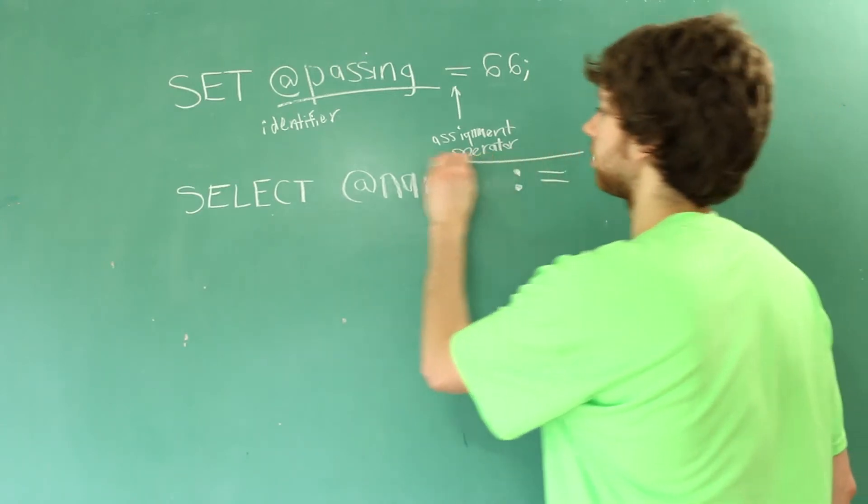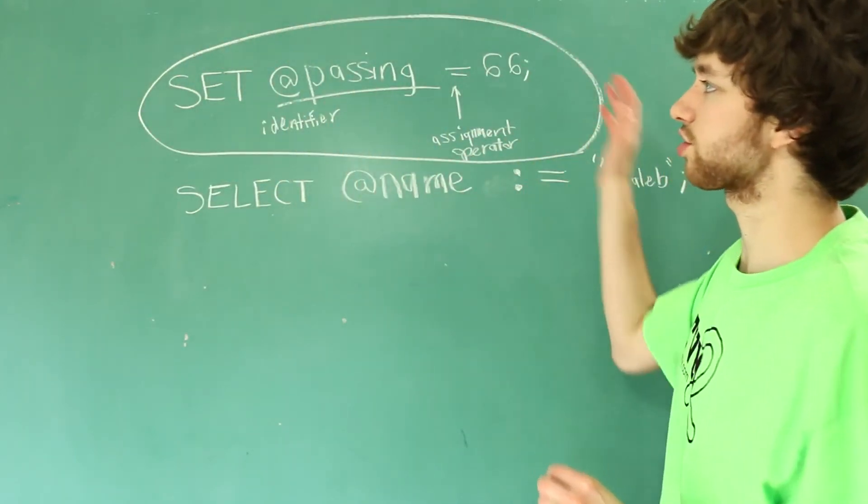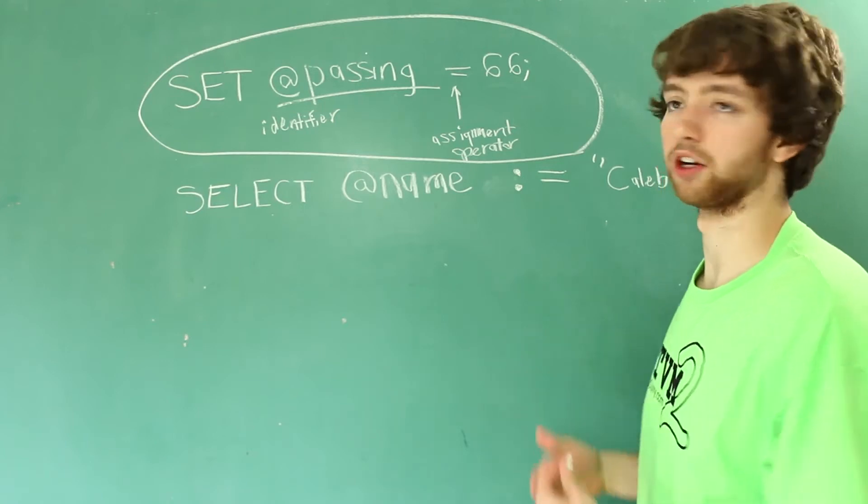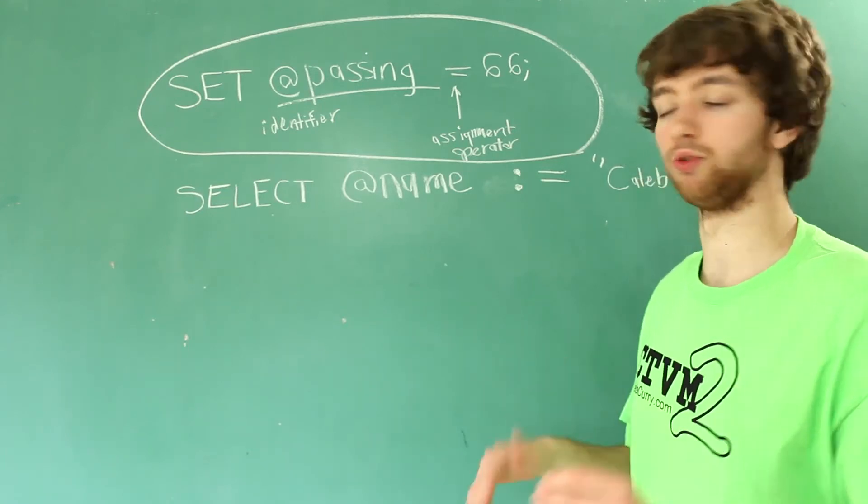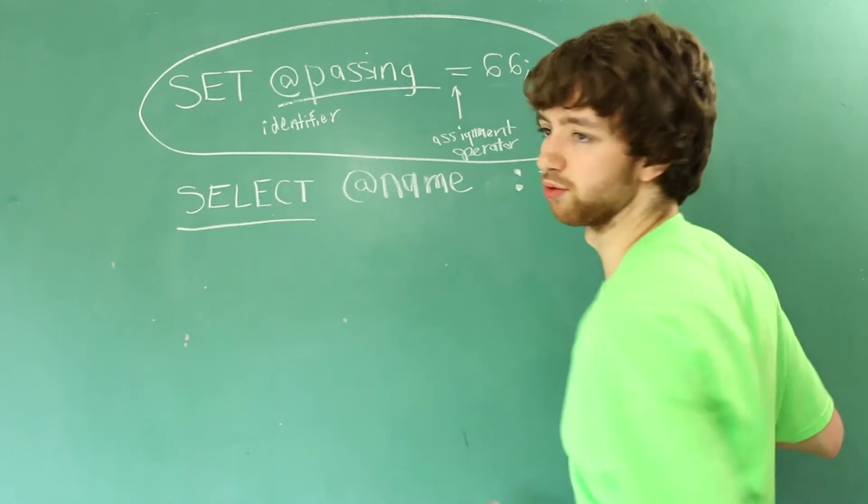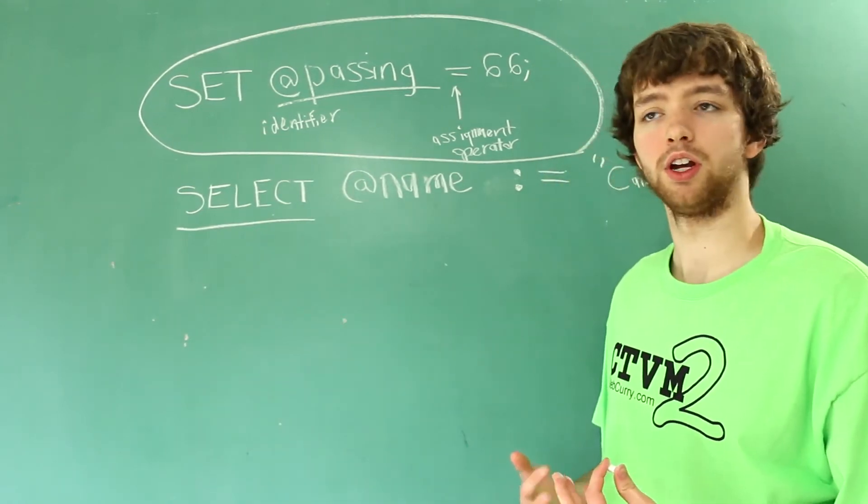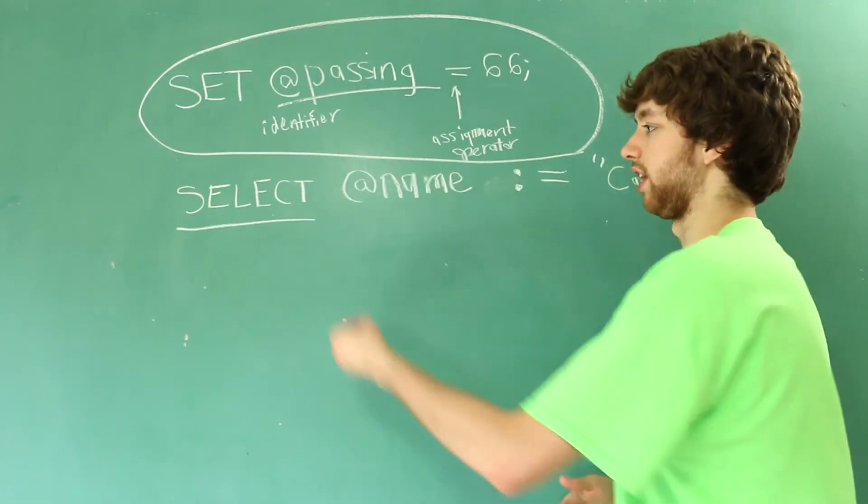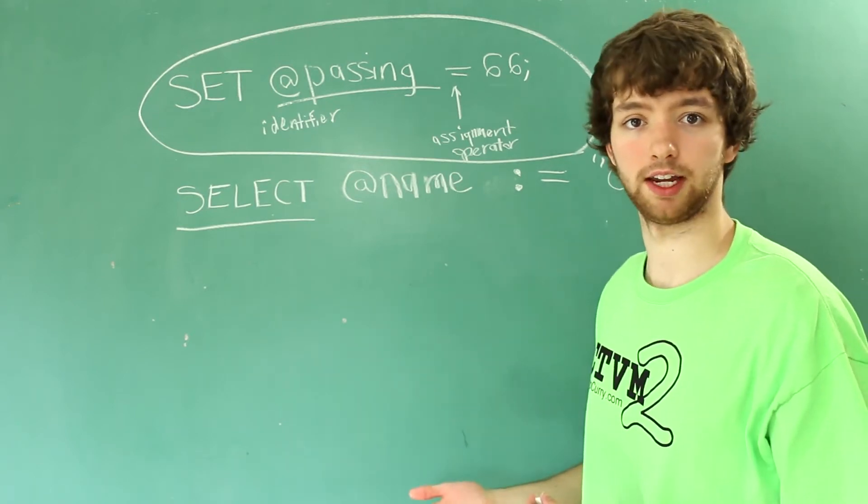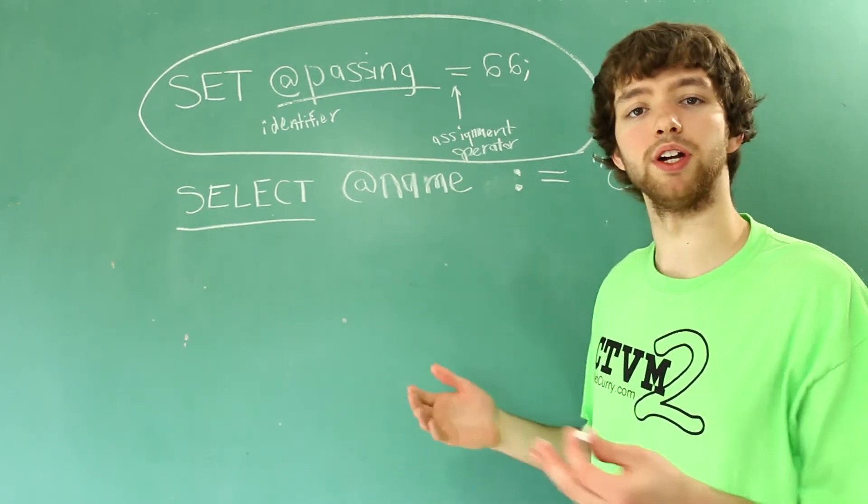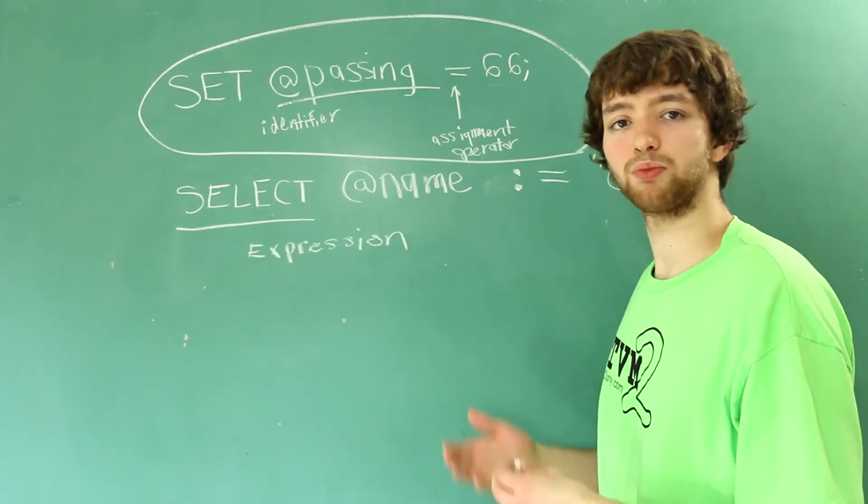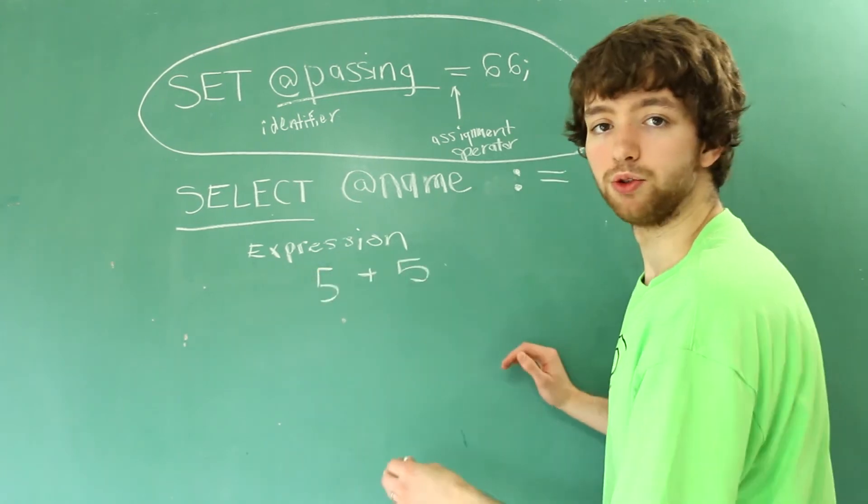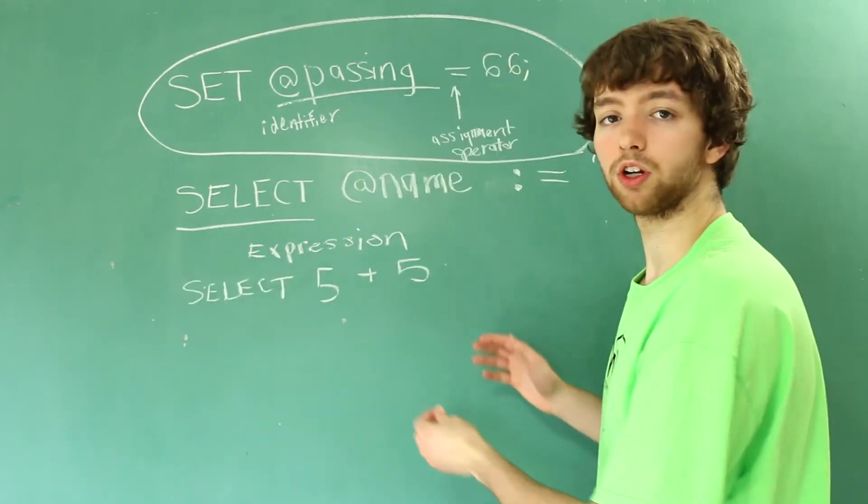But what's the main difference here? Well this one up here is just going to create the variable, but this one is going to actually return that value of whatever that variable is. If you guys have watched my other series you'll know that select is what we use to get information. You can put a from statement and say what table you want to get that data from, but you can also just put an expression in there. An expression is something that is evaluated to a value - an example is 5 plus 5. If we were to do select 5 plus 5 we are going to get back a result table that says 10.